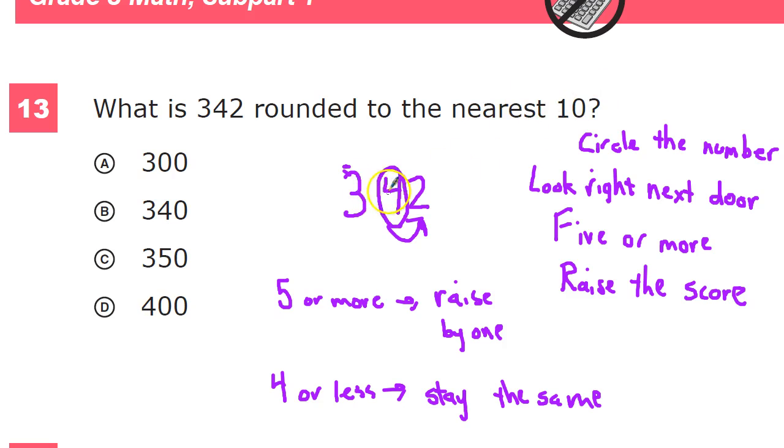It's either going to stay where it is - we're good, we have plenty of room down here - or it's going to raise up. The 4, to determine what it's going to do, I'm going to look at the 2. It's not 5 or more, so it has plenty of space to hang out in that position, doesn't need the 4 to do anything. It's fine to just stay like you are.